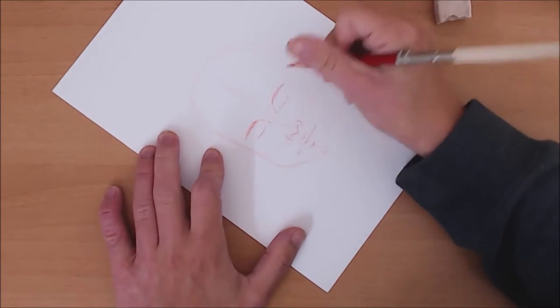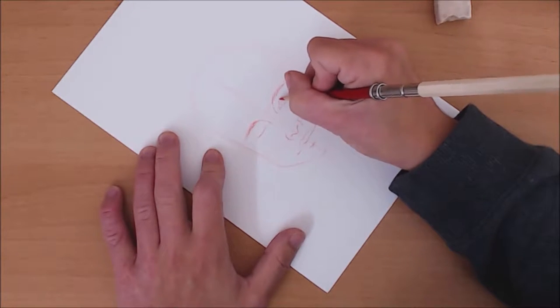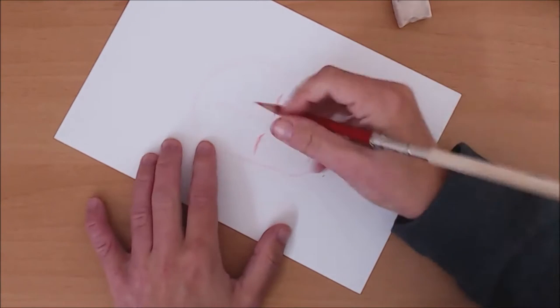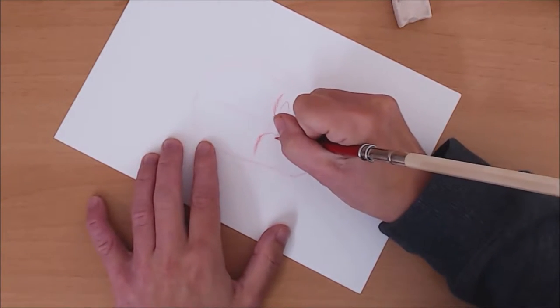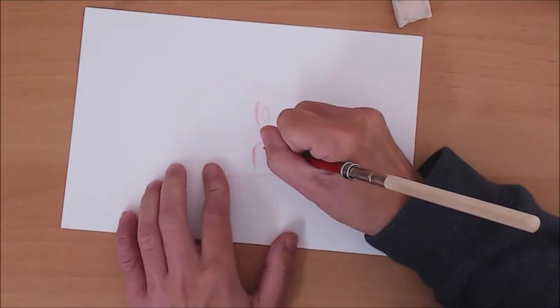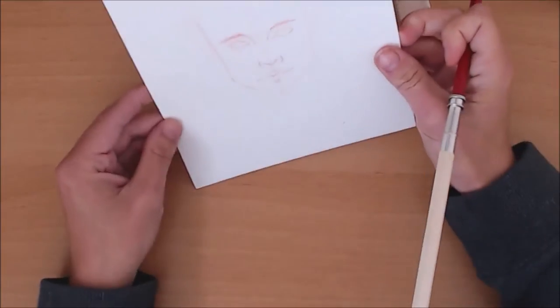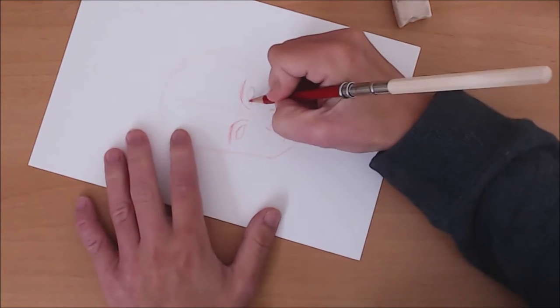But I didn't struggle too much with the eyes, which is usually the point where I tend to be a bit nitpicky and redo them. I think I only redid the left eye, which is actually a right eye, once, which is pretty good going for me. And here I'm lifting my paper to see if they're aligned and if they're in the right place.